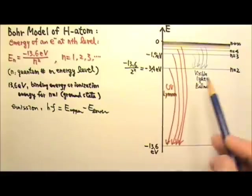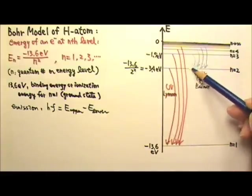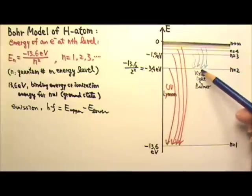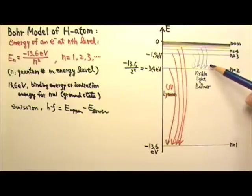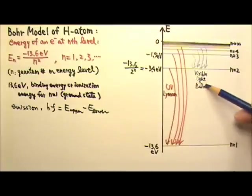If the lower energy level is N equals 2, that means the transition would go from 3 to 2, 4 to 2, 5 to 2, etc. And this range of energy gives us visible light, and that's the Balmer series. Because they are in the visible light range, that's why the Balmer series were the ones that were observed first.